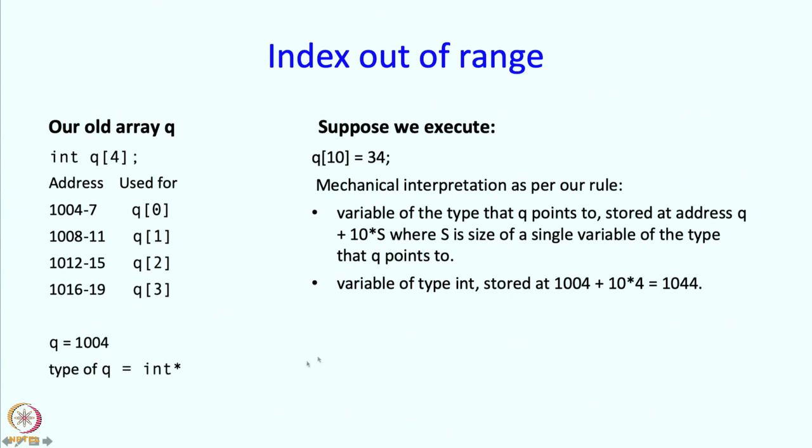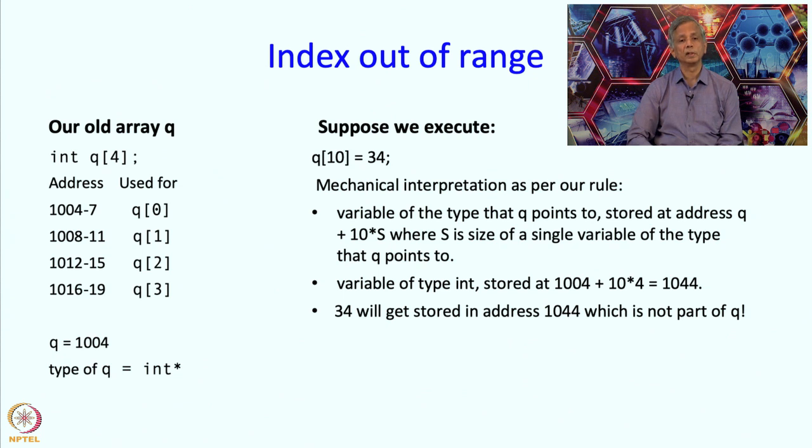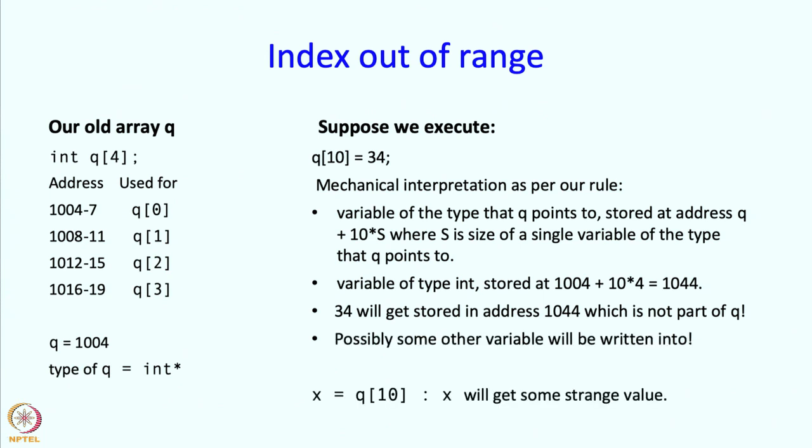So it is a variable of type int because q points to int. It is stored at q plus 10 times s, so q plus 10 times 4 equals 1044. This is the position where q of 10 would have been had q actually had 10 elements. But q does not have 10 elements. So this address is somewhere beyond the region allocated for q. If you execute this statement, 34 will get stored in some strange part of memory which has nothing to do with q. That is why it is bad to have indices out of range - some other variable will get destroyed.